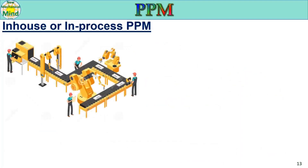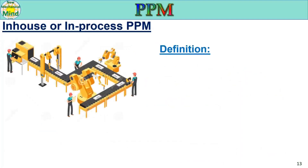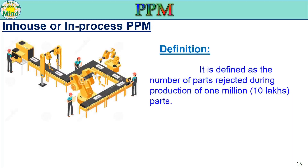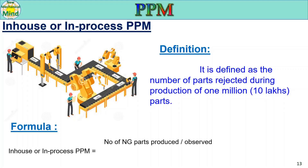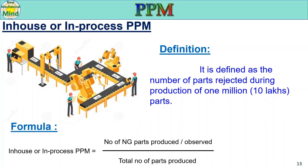In-house or in-process PPM definition: it is defined as the number of parts rejected during production of 1 million (10 lakh) parts. The formula is: In-house PPM = (Number of NG parts produced or observed ÷ Total number of parts produced) × 10 lakhs.